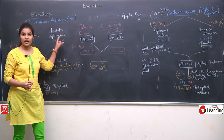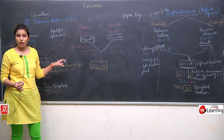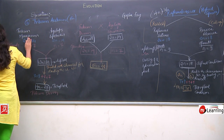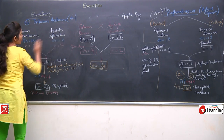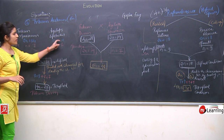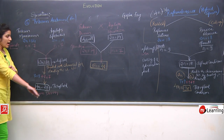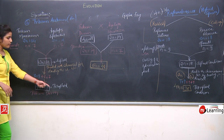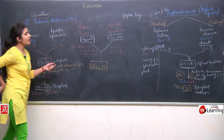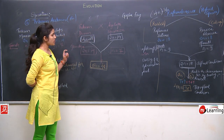Therefore, Triticum aestivum is hexaploid and it has chromosome number 42. It is formed from Triticum monococcum and Aegilops speltoides, both with 2n equals to 14, which released gametes and formed one diploid situation.